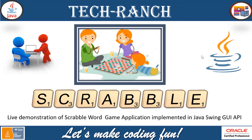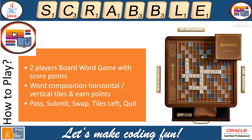Today we are going to present you a live demonstration of one of the most popular Scrabble word game applications implemented in Java Swing graphical user interface API. Before we get into the demonstration, let's first see what Scrabble actually is. Scrabble is a two-player controlled board word game with a score points feature — word composition horizontal and vertical tiles to earn points.